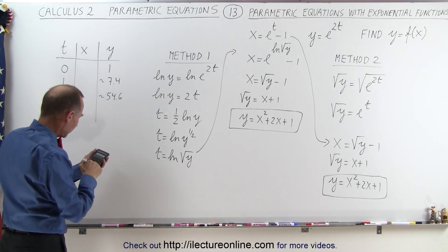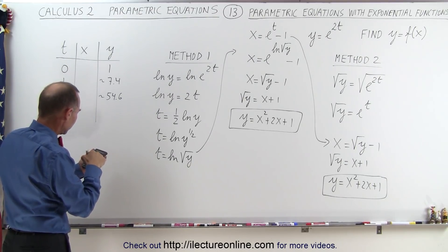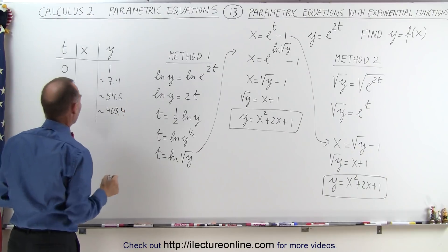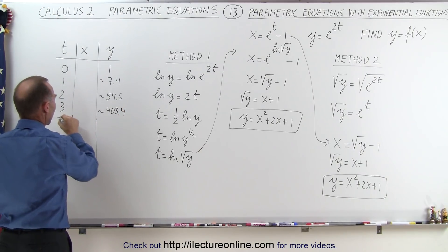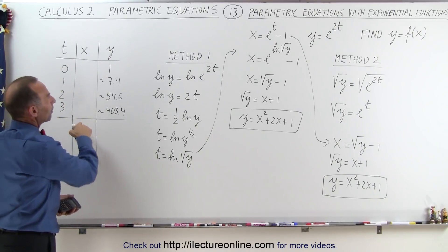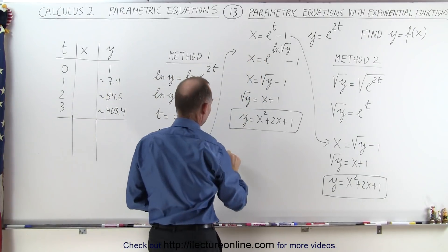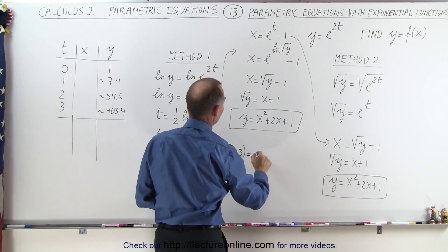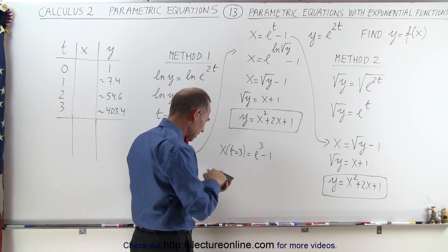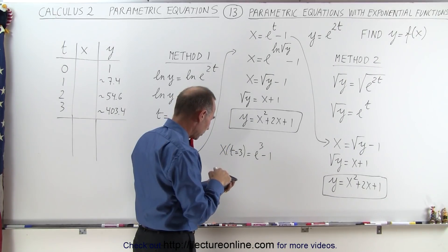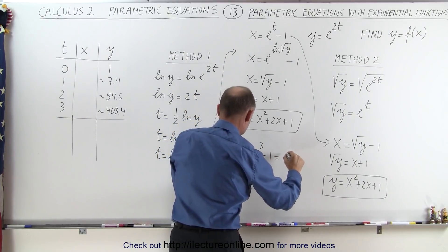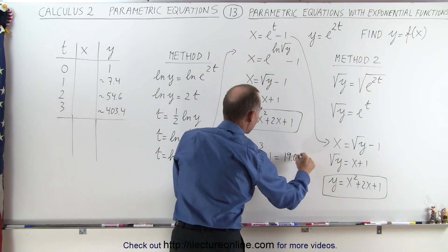If t equals 3, we get y equals e to the sixth, which is approximately 403.4. Now to verify the correct equation, if t equals 3, what is x? Using x equals e to the t minus 1: x equals e to the 3 minus 1, which gives 20.08 minus 1, approximately 19.0855.